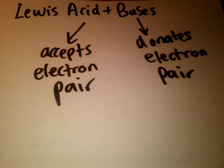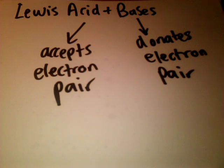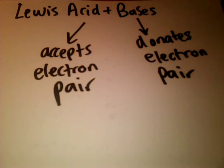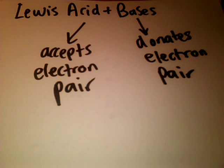Welcome to 5-Minute School and in today's video we're going to discuss Lewis acids and bases. A Lewis acid is any substance that accepts an electron pair, while a Lewis base is any substance that donates an electron pair in forming a covalent bond.